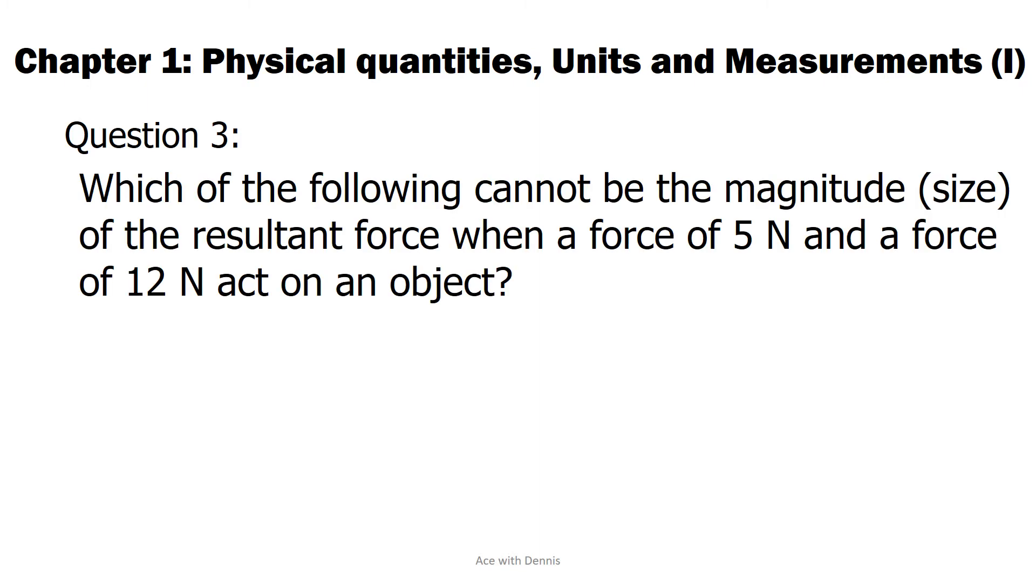Question 3: Which of the following cannot be the magnitude or the size of the resultant force when a force of 5 newtons and a force of 12 newtons act on an object? A. 13 newtons. B. 7 newtons. C. 17 newtons. D. 20 newtons.